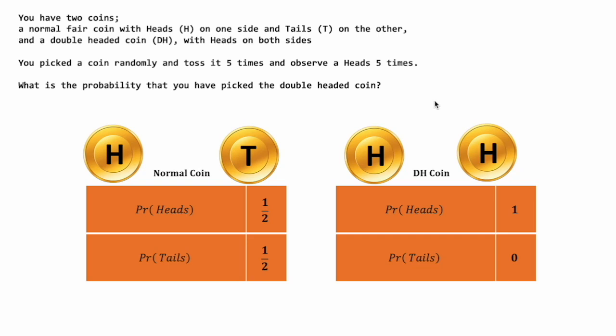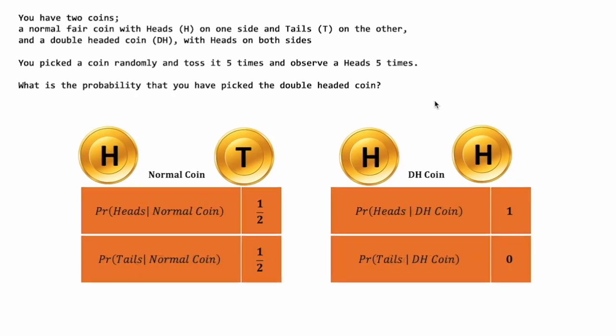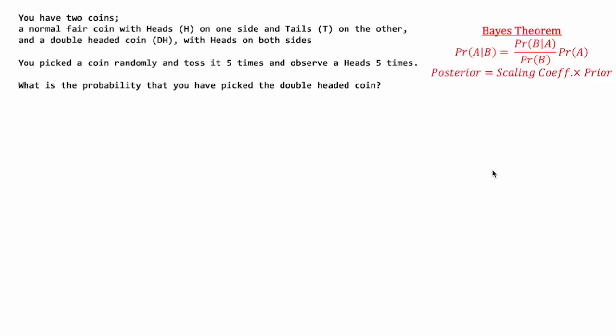Now, because these probabilities are dependent on the coin chosen — or to be more precise, they are conditioned on the coin chosen — these probabilities should be conditional probabilities. The probability that we have picked a double-headed coin, given that a head was obtained five times when flipping this randomly chosen coin, this is clearly an application of Bayes' theorem.